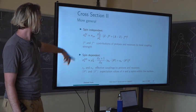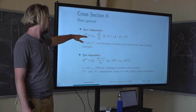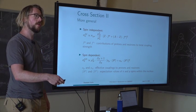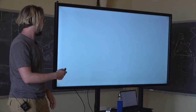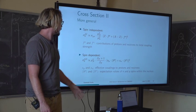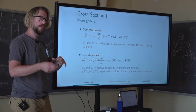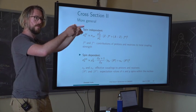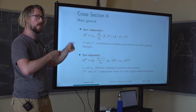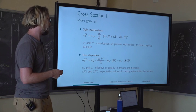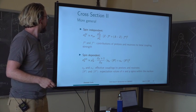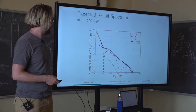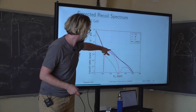Looking in more detail at the spin-independent cross section: we have contributions from proton and neutron couplings to the total coupling strength, but we typically assume they are the same size, giving the A-squared term. Depending on the material used — in CRESST we have materials that also give sensitivity to the spin-dependent cross section. The recoil rate is quite modular, so you can exchange components like looking for spin-dependent interactions as well. This is what the recoil rate looks like on calcium tungstate, which we use in CRESST.